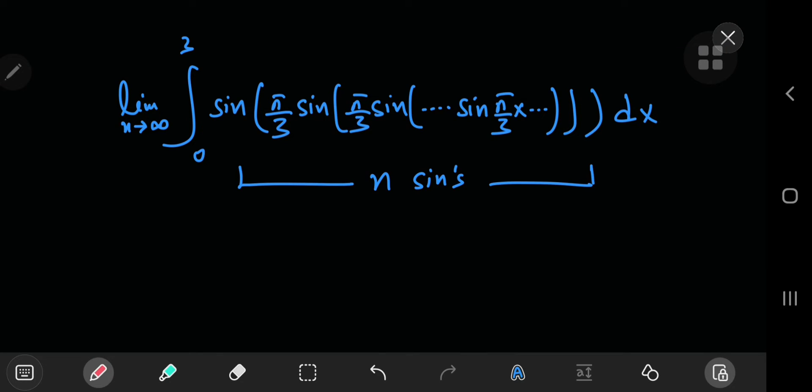This is an absolutely insane integral from the 2022 MIT Integration B qualifying exam. It involves nested sines and π/3, and we have to evaluate the integral in the limit as n goes to infinity. This looks really cool, but how exactly are we going to solve it?